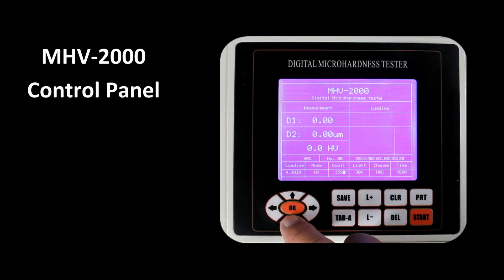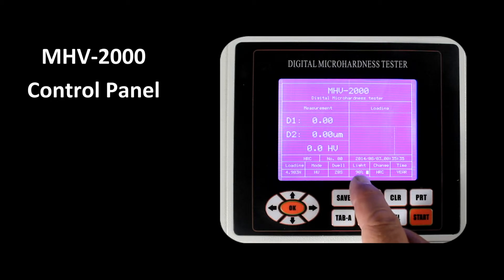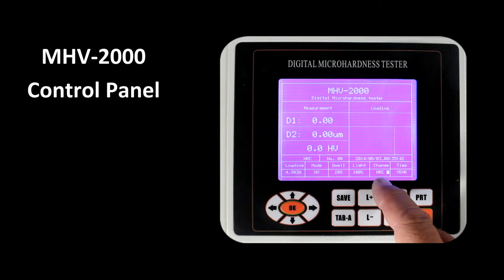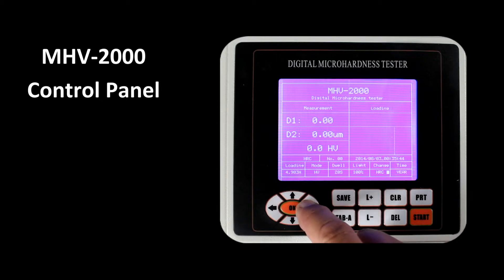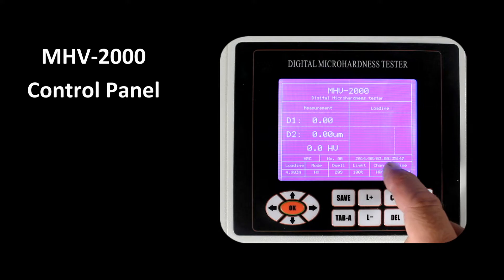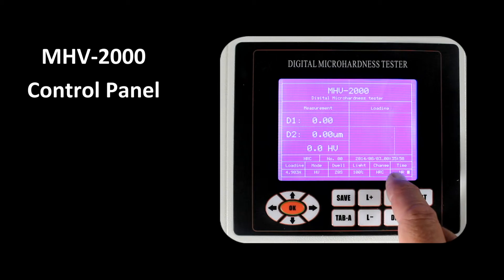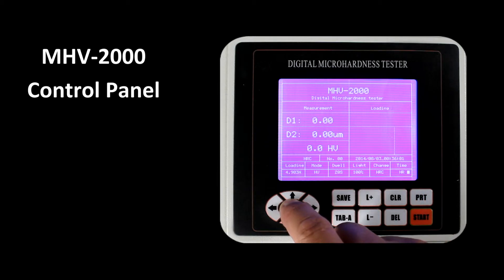And dwell time, we can change the dwell time to either be shorter or longer by scrolling up and down. The light intensity, we can change that here. So let's change it to 100%. The conversion scale, right now it's set for HRC. We'll just leave it there. And then if we needed to change any of the parameters in this date stamp, we could come in here. The initial parameter would be year, then it would be month, day, and hour. And to get out of this programming mode, all we have to do is press the OK button.